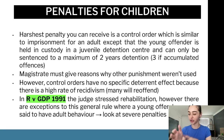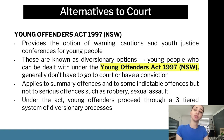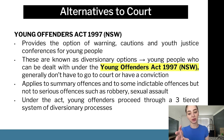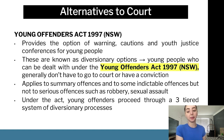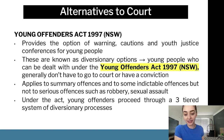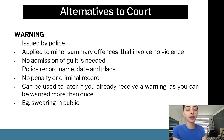Under the Young Offenders Act 1997 NSW, the different penalties a young offender can receive include warnings, cautions, youth justice conferences, and diversionary programs. Diversionary programs exist under the same legislation — you don't go to court or receive a conviction but instead attend a program tailored to rehabilitation. They apply to summary offenses and some indictable offenses, but not serious offenses such as robbery or sexual assault. Under the Act, young offenders proceed through a three-tiered system of diversionary processes, and these are very successful with low rates of recidivism.